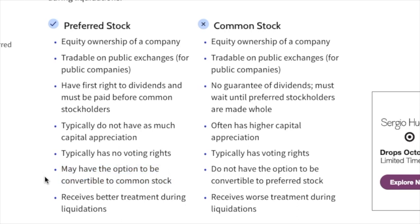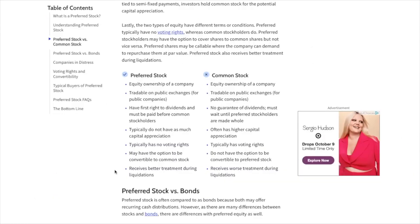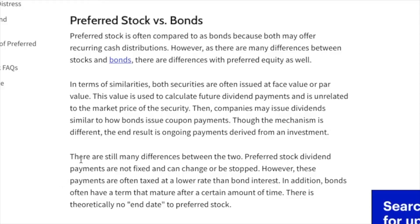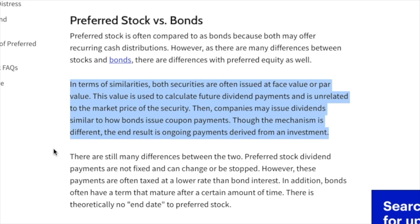Next, preferred stockholders have no voting rights but may be able to convert their preferred shares into common shares. Common stockholders typically have more voting rights but cannot convert into preferred shares. Last, preferred stocks sit below bonds in the capital structure but above common stock. In the event of a liquidation, bond holders get paid first, followed by preferred stockholders, with common stockholders being last. Preferred stocks can be thought of as a hybrid between common stocks and bonds, as preferred stocks are often issued at the liquidation preference price and can be repurchased by the issuing company at that price at some predetermined time in the future.